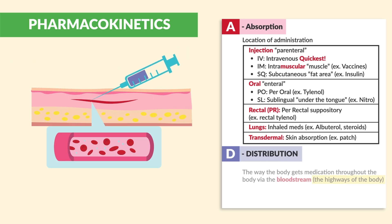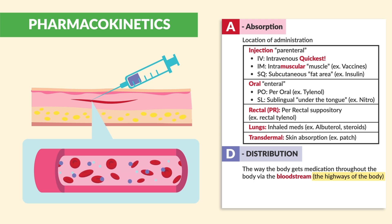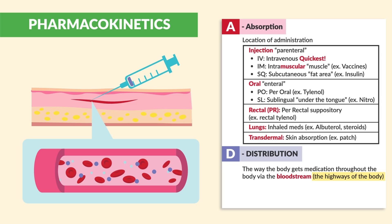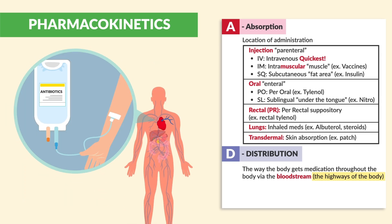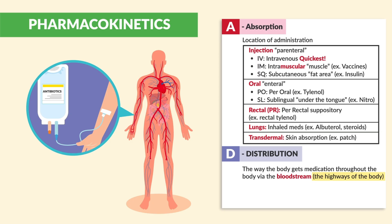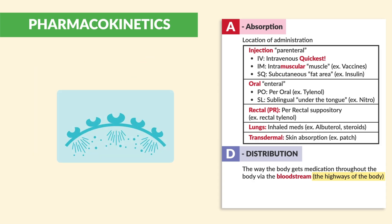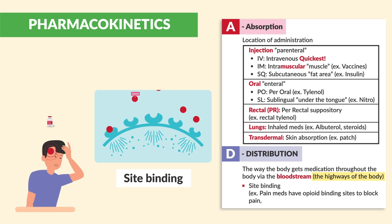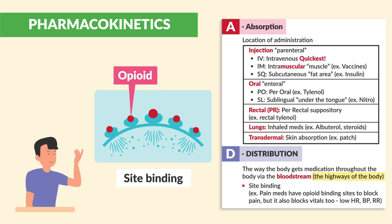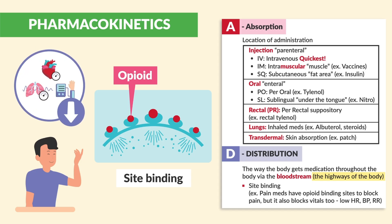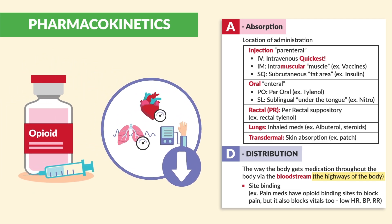Next is D for distribution — the way the body gets medication throughout the body via the bloodstream, basically the highways of the body. If you give an IV antibiotic into the client's vein, it goes directly into the bloodstream and then all over the body. Wherever blood goes, that's where the medication goes — to the kidneys, brain, and everywhere. The key point is that certain medications are absorbed by specific binding sites. For example, pain medications have opioid binding sites to block pain, but they also block vital signs. With opioids, we see low and slow heart rate, blood pressure, and respiratory rate — that's why we say opioids make the vitals low and slow.